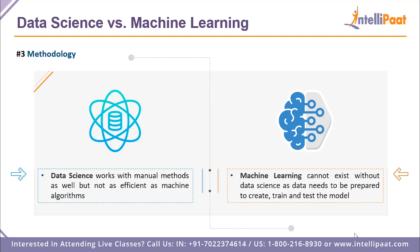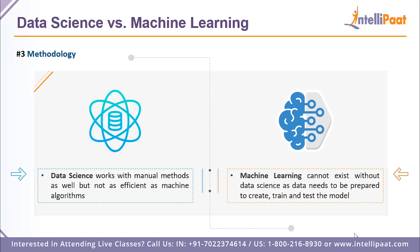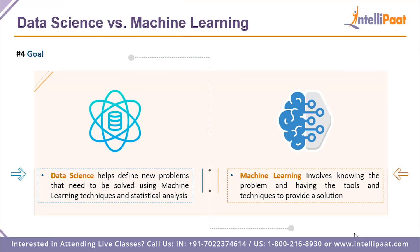Regarding goals: data science helps define new problems that need to be solved — rather than directly solving existing ones, it identifies new problem areas. Machine learning then provides the answer, using its statistical, analytical, and modeling techniques to generate solutions. Machine learning has all the tools and techniques needed to build models around a problem and solve it.